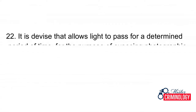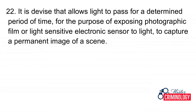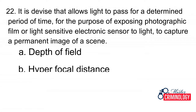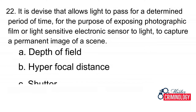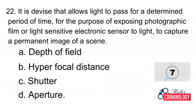Question 22: It is a device that allows light to pass for a determined period of time for the purpose of exposing photographic film or light-sensitive electronic sensor to light, to capture a permanent image of a scene. A. Depth of field, B. Hyperfocal distance, C. Shutter, D. Aperture. Answer: C. Shutter.